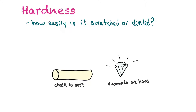Hardness is often misinterpreted — we think of it as whether something is squishy, but that's not the scientific definition. In science, hardness is how easily an item is scratched or dented. Chalk is not squishy, but it is soft because it can be easily scratched — if you ran your fingernail along chalk, it would crumble. Diamonds, on the other hand, are one of the hardest substances. They cannot be scratched, which is why they make valuable gemstones — they don't get scratched, dented, or damaged.